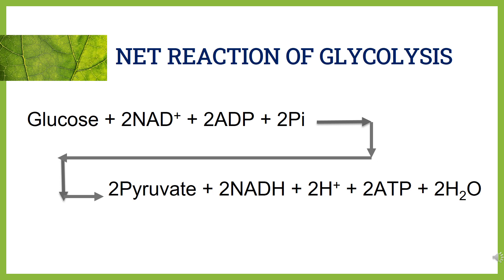Net reaction of glycolysis: Pyruvate is the end product of glycolysis. A total of two ATP is derived in the process. The equation is: glucose + 2 NAD⁺ + 2 ADP + 2 inorganic phosphate → 2 pyruvate + 2 NADH + 2 H⁺ + 2 ATP + 2 water molecules.